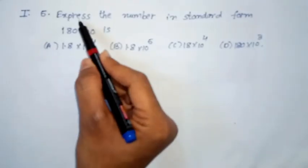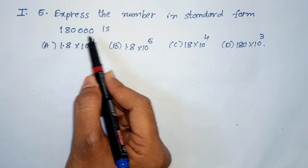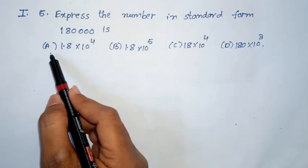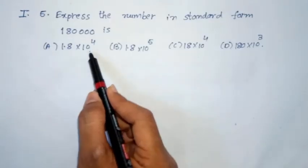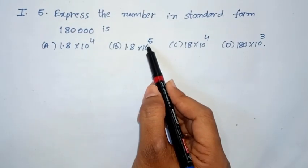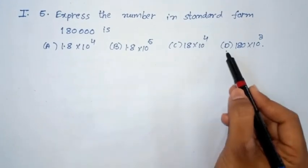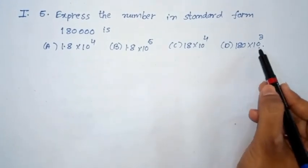First roman, fifth question. Express the number in standard form. 1,800,000 is. Option A, 1.8 x 10 power 4. Option B, 1.8 x 10 power 5. Option C, 18 x 10 power 4. Option D, 180 x 10 power 3.